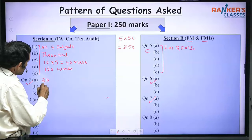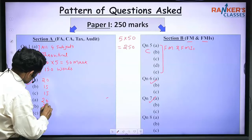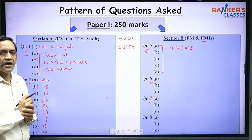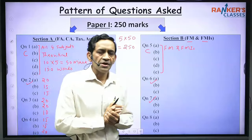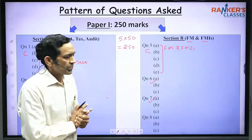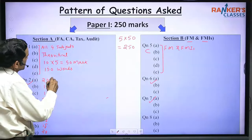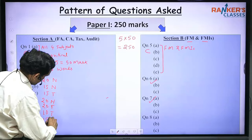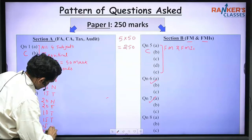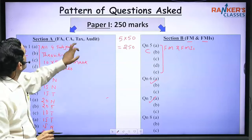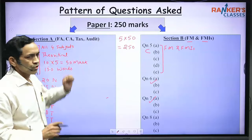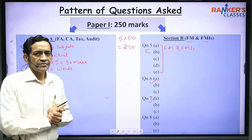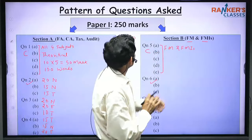The non-compulsory questions carry marks in patterns like 20-15-15, or 20-20-10, or 15-15-20, so they are a mix of 15-mark, 20-mark, and 10-mark parts. These questions are a mix of theory and numerical — it may be numerical, theory, or a combination. These questions are asked from all four areas: Financial Accounting, Cost Accounting, Taxation, and Audit.